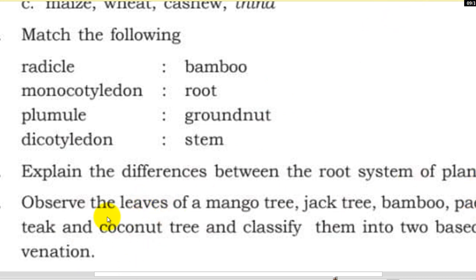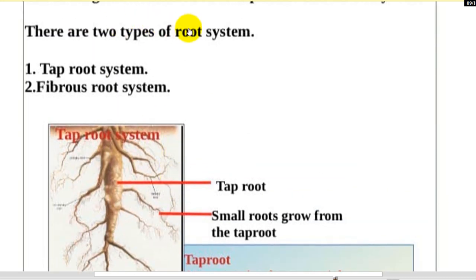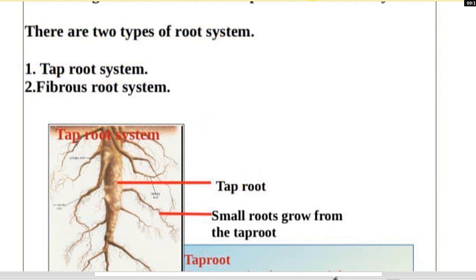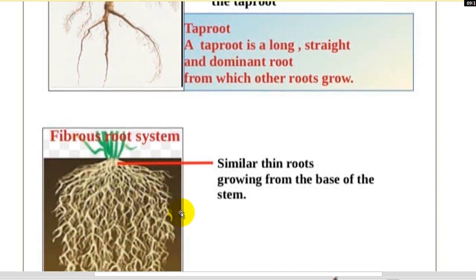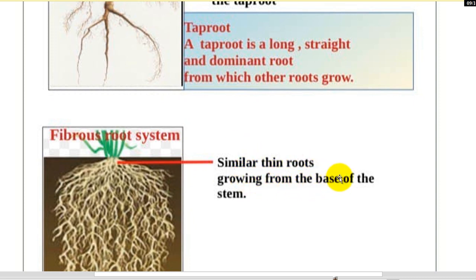Observe the differences between the root system of plants. Explain the root system. There are two types of root system: fibrous root system and taproot system. The root system is growing from the base of the system.